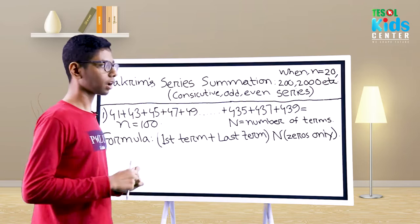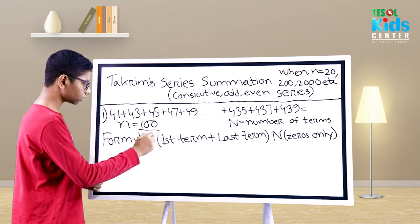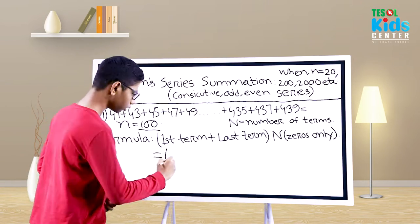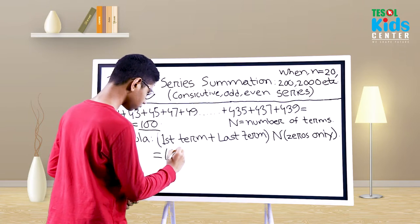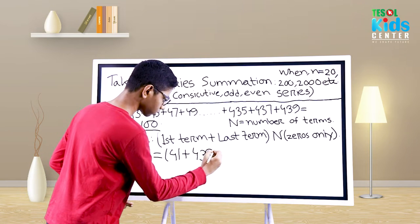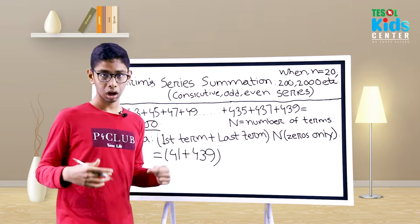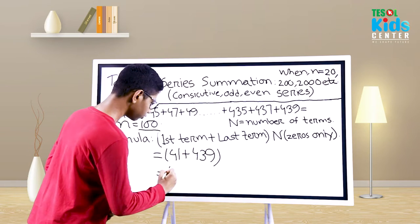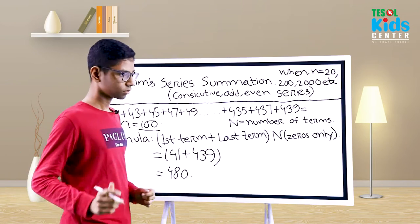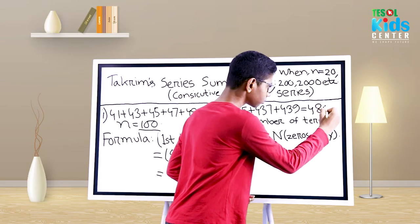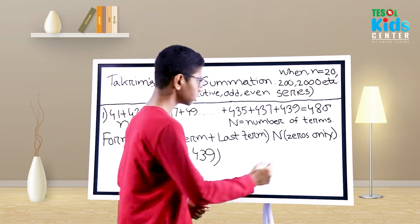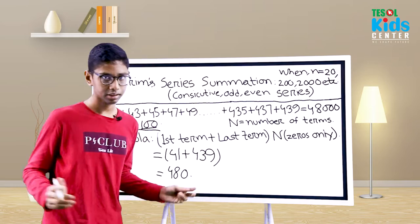Now let's solve our question. Here n equals 100, so we have to add the first term and the last term. Our first term is 41, plus our last term 439 — adding them gives us 480. Now we write 480, and then append two zeros because there are two zeros in n (100). So our answer is 48000.